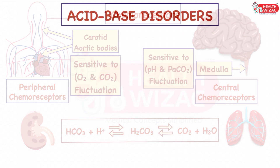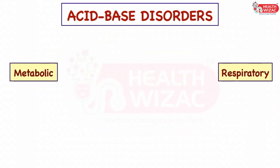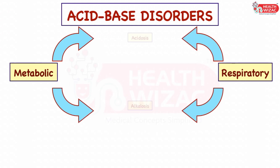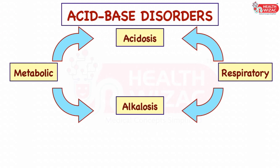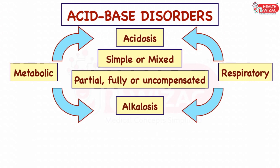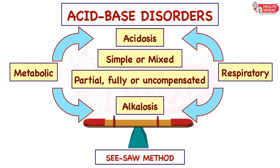Acid-base disorders result in either metabolic or respiratory acidosis or alkalosis, which may be simple or mixed. As per compensation, they may be partially compensated, fully compensated, or uncompensated. The effects and the body's response can be easily understood by the simple seesaw method.